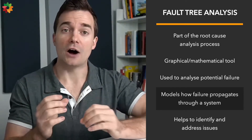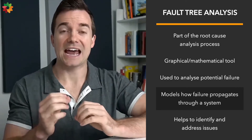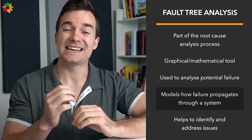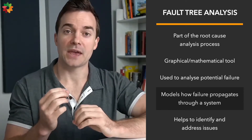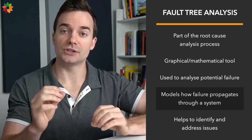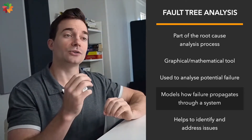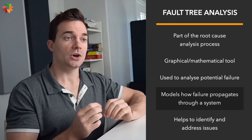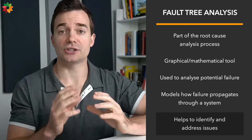FTA works by trying to model how failure propagates through a system. To conduct FTA, a catastrophic event for a process is imagined and the team conducting the analysis will think about conditions that can lead to such an event. All reasons for why the event could happen will be mapped relationally using Boolean logic. From there, the team goes down the list of causes till the root causes are completely mapped out. When finished, the fault tree diagram helps the team to identify the primary issues that led to a catastrophic failure, so they can apply proper corrective and preventive measures in the future.